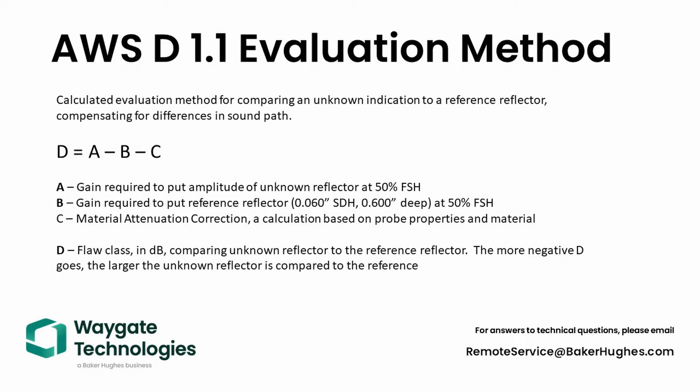We have four parameters. Parameter A is the flaw gain - the gain required to get our echo for the signal under evaluation to 50% screen height. Parameter B is our reference gain - how much gain did it take to set our reference indication to 50% screen height.